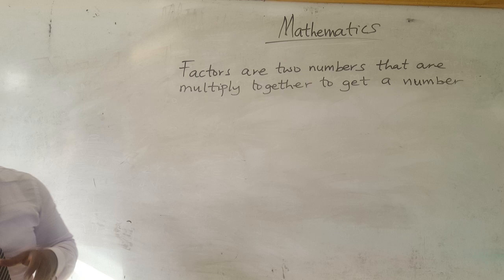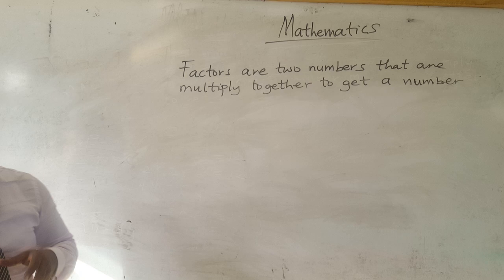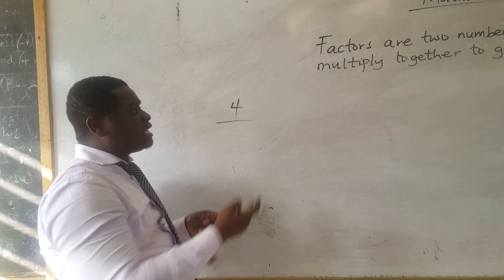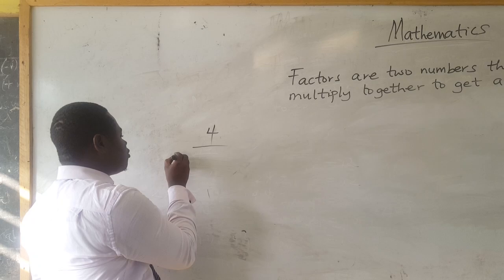Good. So we had two numbers that we multiply to get another number. With that, we learned how to find factors of numbers. Let's find factors of four — meaning we are looking at two numbers that when multiplied give us four.